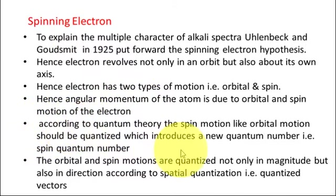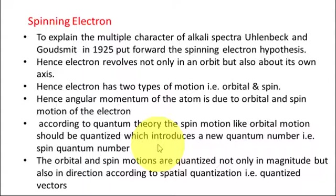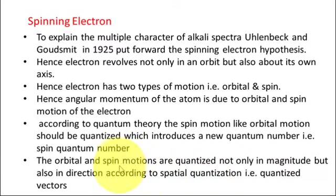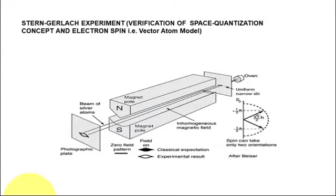According to quantum theory, the spin motion, like orbital motion, should be quantized, which introduces a new quantum number — the spin quantum number. When we consider the spin of the electron revolving about its own axis, we get the spin quantum number in addition to the principal quantum number n and the orbital quantum number l. The orbital and spin motions are quantized not only in magnitude but also in direction, according to spatial quantization. So now we have principal quantum number n, orbital quantum number l, and spin quantum number s.